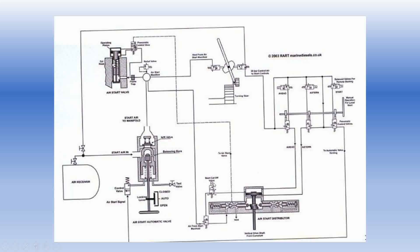The air passes through the cutoff valve and actuates the pneumatic valve, through which the air from the manifold passes, goes below the distributor, and pushes the pilot valve onto the cam. When the pilot valve engages with the cam and reaches the base circle of the cam, the air is allowed through the pilot valve and into the respective cylinder air start valves, depending on the timing of the distributor.